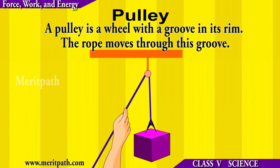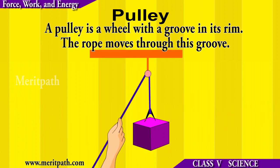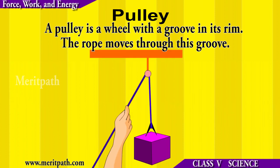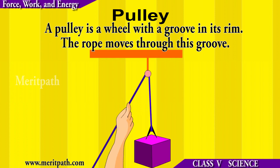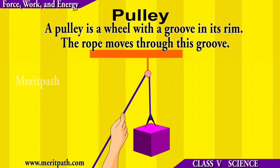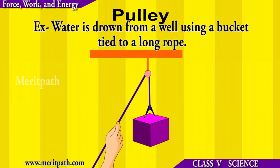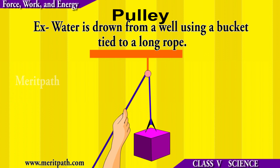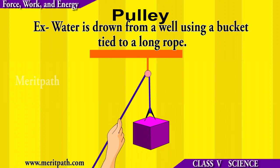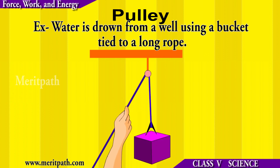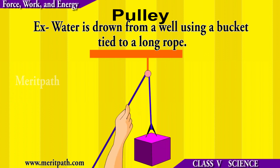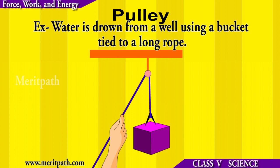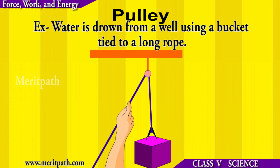A pulley is a wheel with a grooved rim around which a cord passes. It acts to change the direction of a force applied to the cord and is used to raise heavy weights.